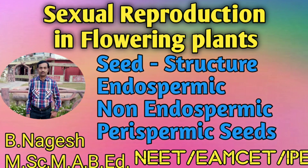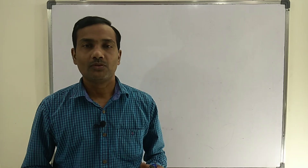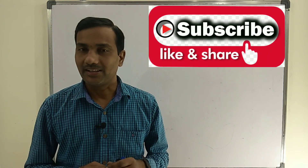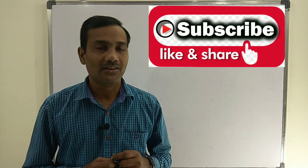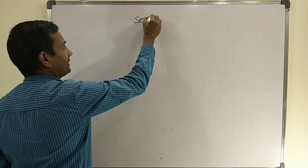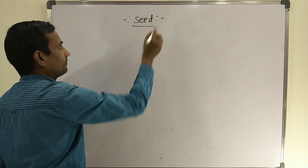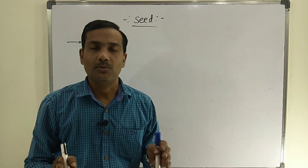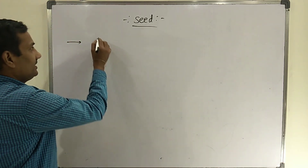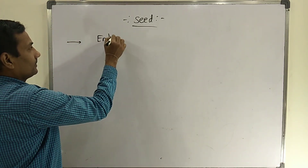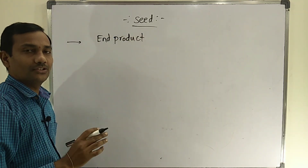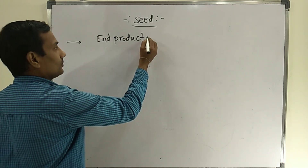Welcome to Nagesh Biology Online Classes. Please subscribe, like, and share with your friends. Let's discuss the topic of the seed. The seed is formed at the end of sexual reproduction, so it is the end product formed in all angiosperms after reproduction.